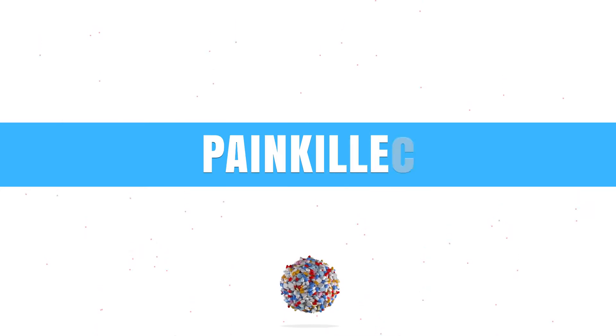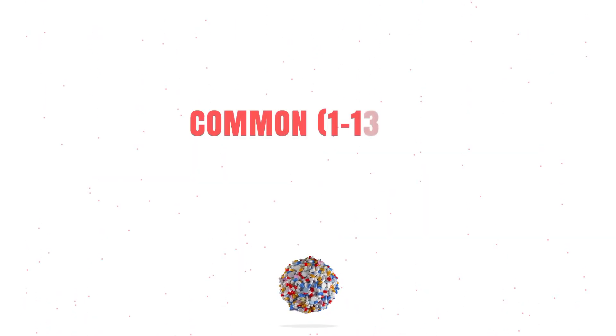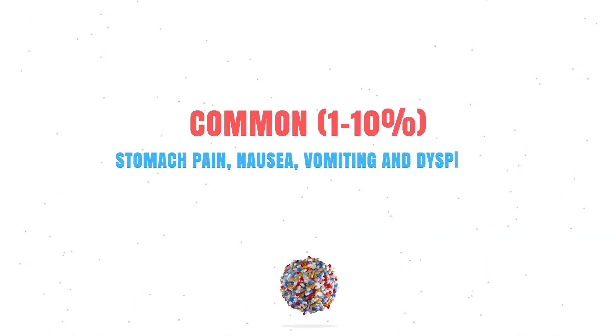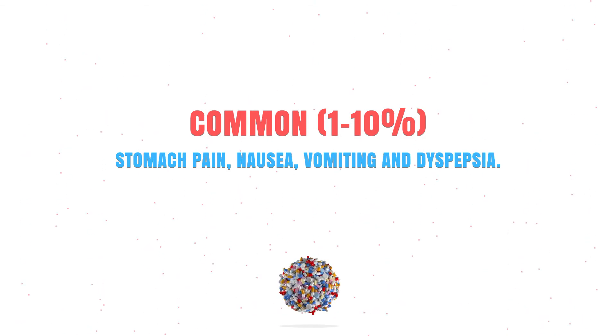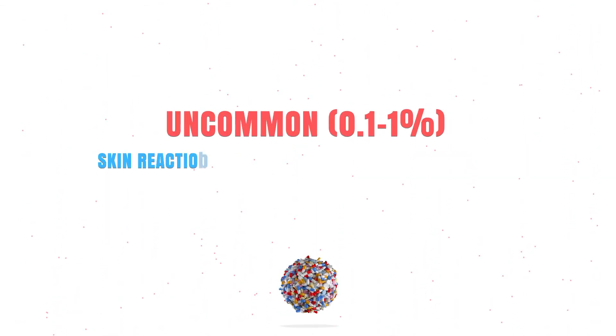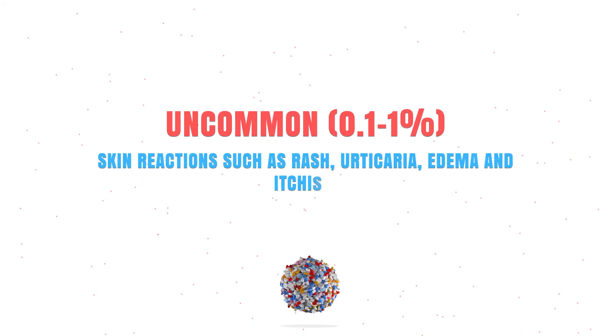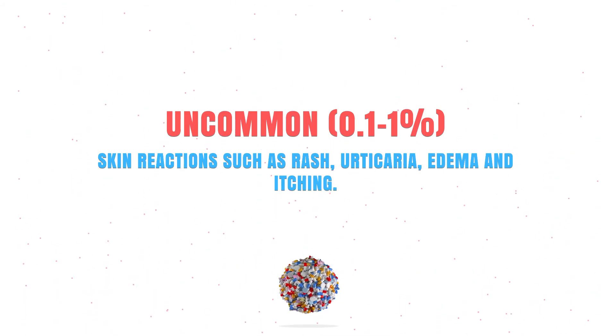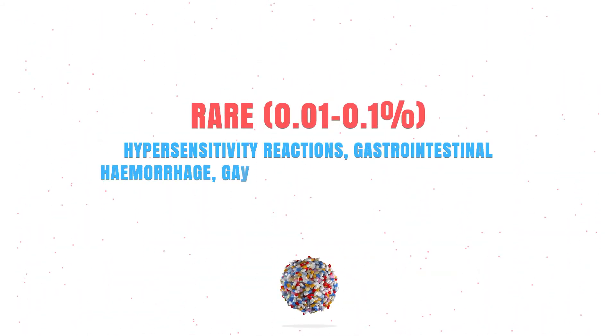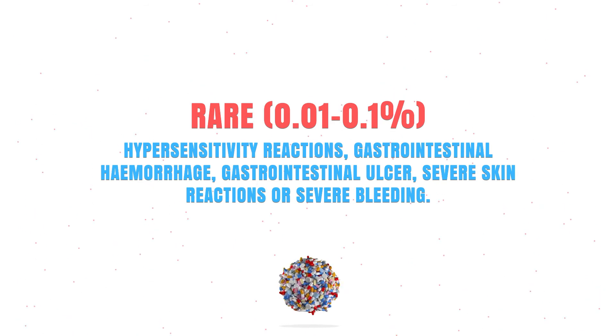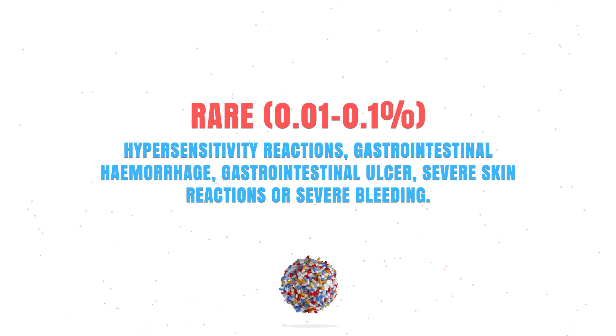Aspirin is a very effective drug, but unfortunately it can also cause some side effects. I will discuss some of the most common ones — if you're looking for a complete list, check your leaflet or ask your doctor or pharmacist. When using aspirin as a painkiller: commonly it could cause stomach pain, nausea, or vomiting. Uncommonly it could cause a skin reaction such as a rash or edema. Rarely it could cause hypersensitivity reactions, gastrointestinal hemorrhage, or severe skin reactions.